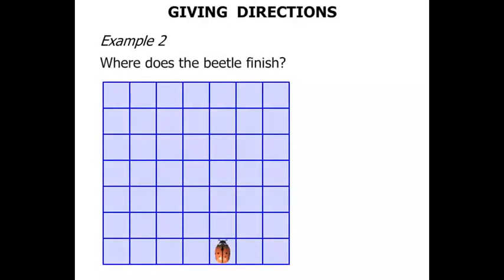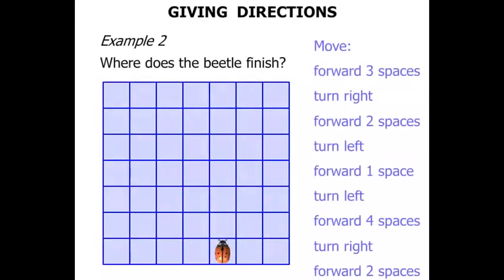Example 2. Where does the beetle finish? These are the directions. A few more directions. And the beetle is actually facing a direction. So let's see, a little bit different here. A, B, C, D, E, F or G. It's going to finish on one of those.